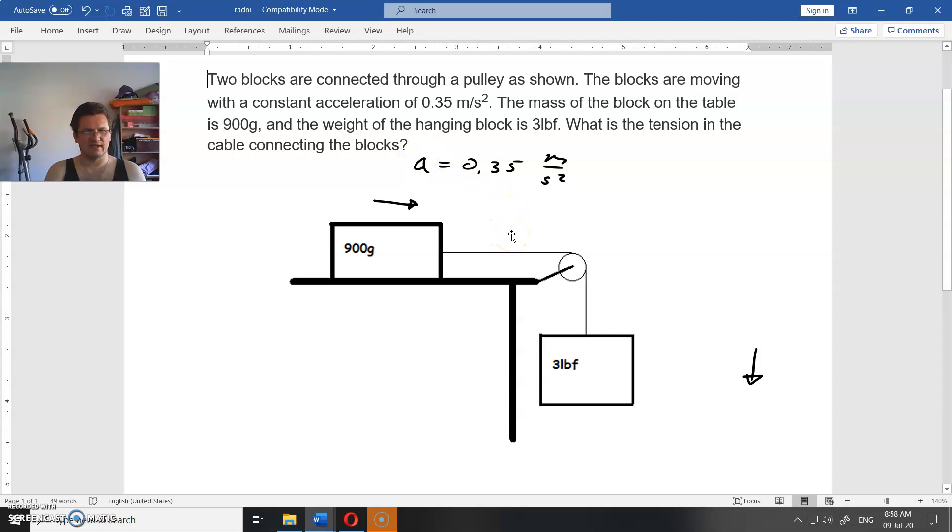The simplest way to do this assignment is to observe this block here, and only that. This block will move with acceleration to the right, and it has 900 grams. We don't have any friction here. Only force exerted on this block is the tension in this cable.